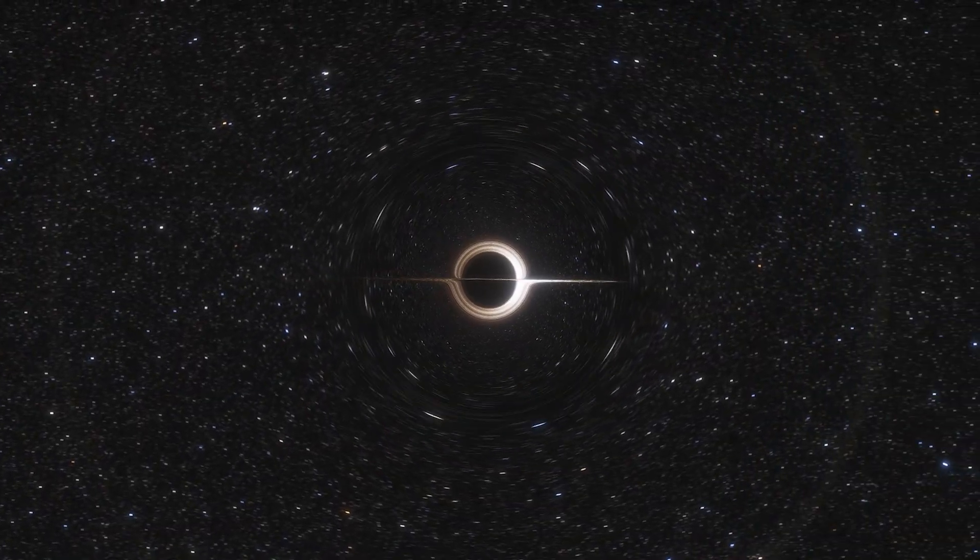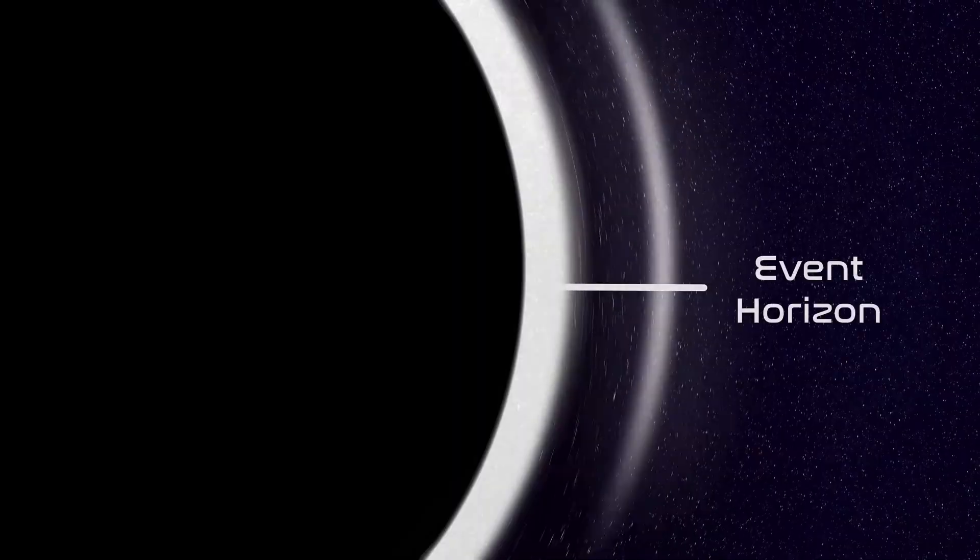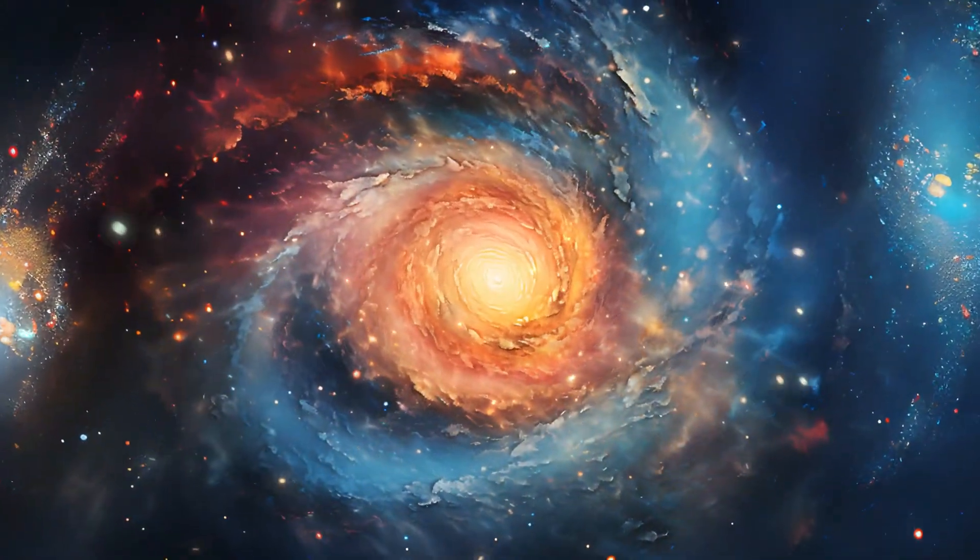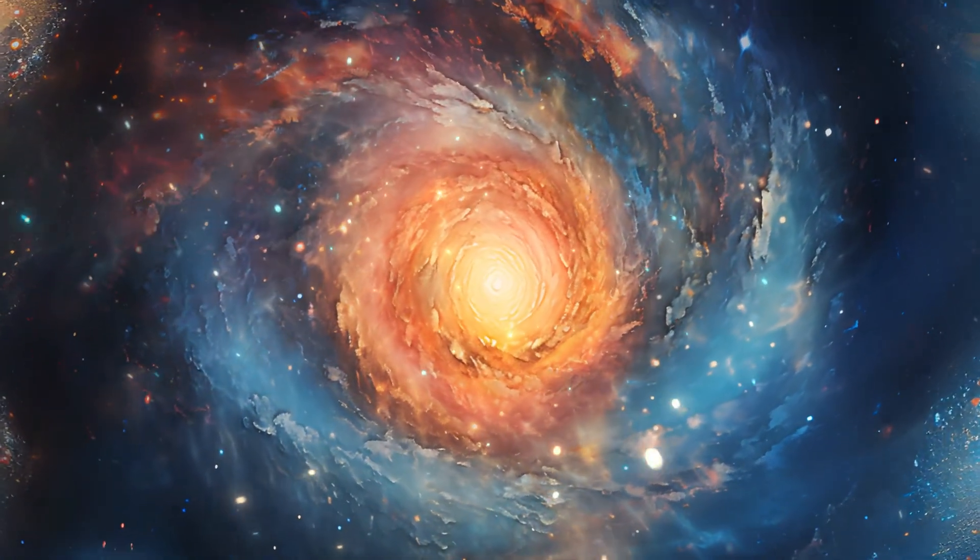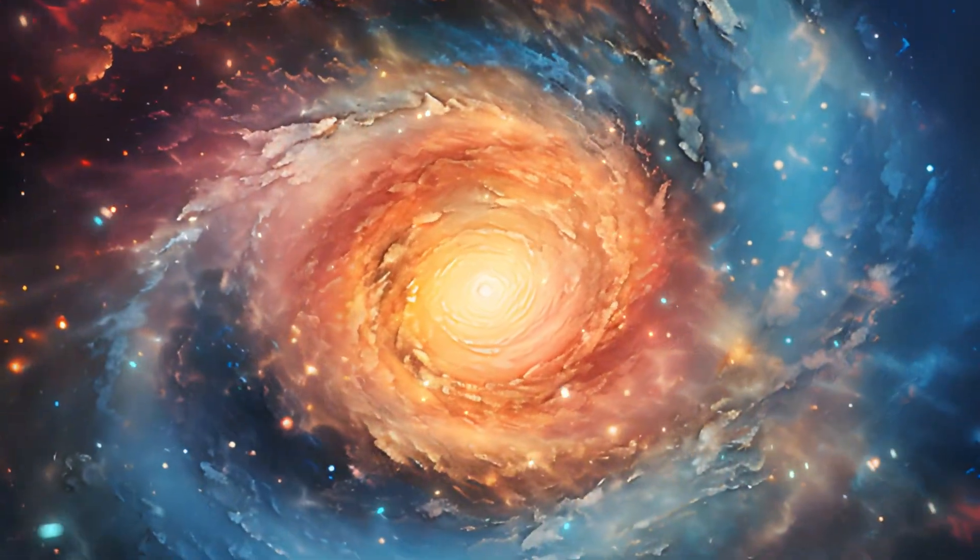That edge beyond which there's no return, we call the event horizon. It's a horizon. The universe has a horizon too. It is a distance beyond which no information can reach us because the universe isn't old enough for light from anything beyond that horizon to have gotten here yet.